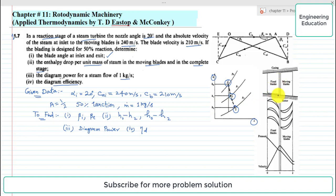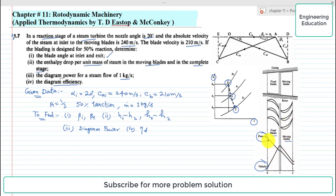This is the configuration of fixed blades and moving blades, showing the profile of pressure and velocity. In the fixed blades, pressure drop occurs while velocity increases. Then in the moving blades, we see the trend that pressure decreases as well as velocity decreases.